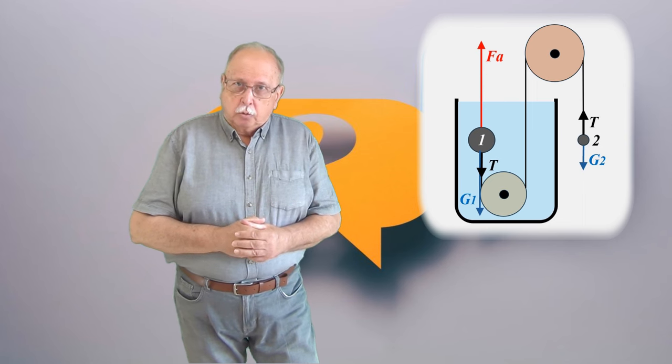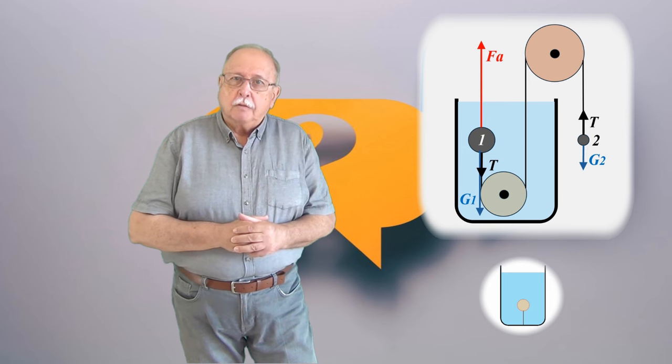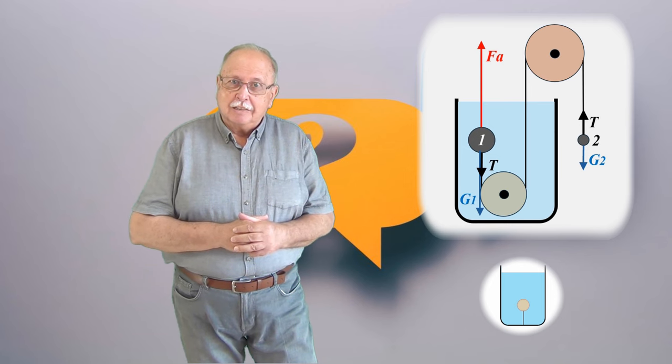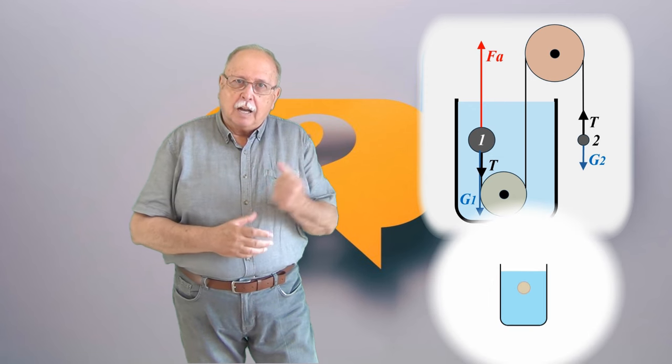Să ne gândim la un caz mai simplu. O bilă din lemn este ținută cu un fir de fundul unui vas cu apă, așa cum vedeți în desen. Știm că dacă se rupe firul, bila urcă spre suprafața apei.